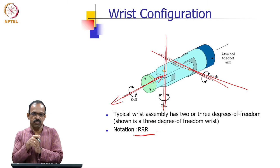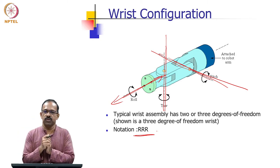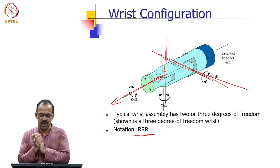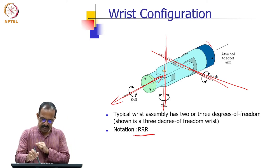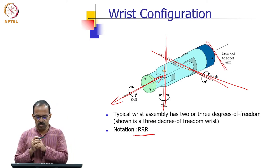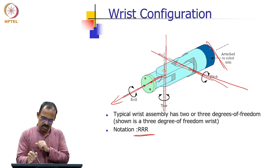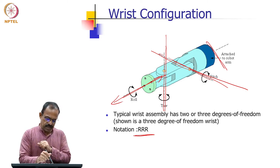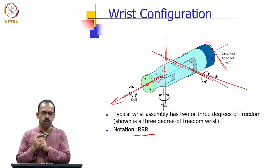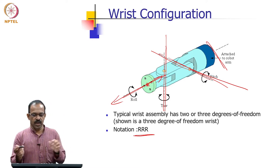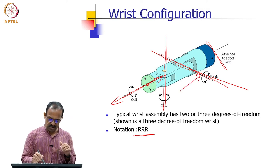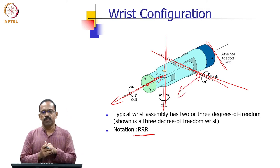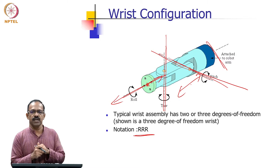For positioning you can have prismatic joints, but for orientation you cannot use prismatic joints, so all the wrist joints will be rotary. This part will be attached to the positioning part — the body and arm part will be attached to the wrist assembly, and then the tool is connected to it. So the body and arm assembly and tool are connected through the wrist assembly.